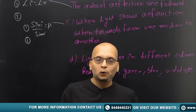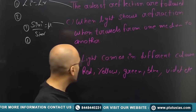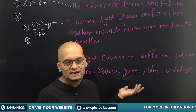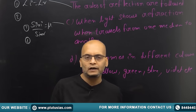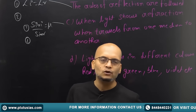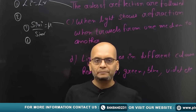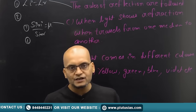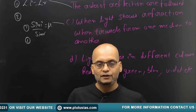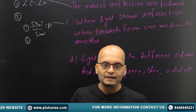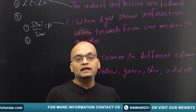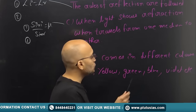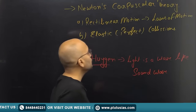One more known fact was that light has several colors — violet, blue, red, indigo, yellow, green, etc. Now, the first major step to describe light was taken by Sir Isaac Newton, who gave his theory known as Newton's Corpuscular Theory. I'm going to brief out this theory to you.